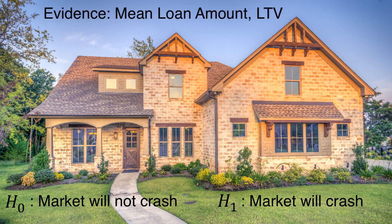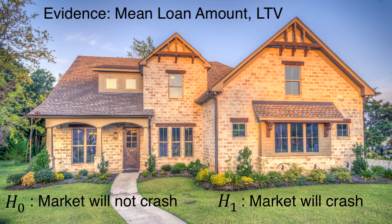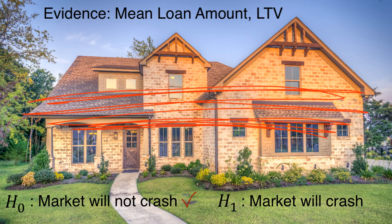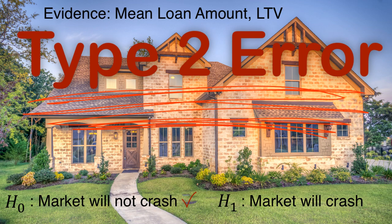We gather evidence, that is something like mean loan amount taken to purchase property, loan to value for different transactions, the number of cash transactions over time, etc. But say we fail to reject the null hypothesis when it is actually false. In other words, we fail to predict the crash. Such a type two error is much more catastrophic than the false positive type one error. So yeah, type one error versus type two error, which is worse? It depends on the context.